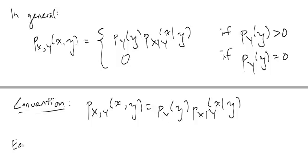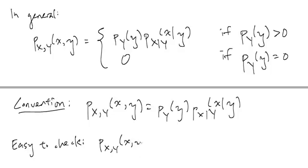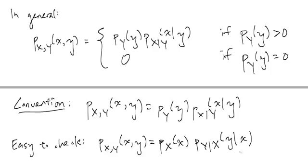It is easy to check that we derived the product rule by looking at the definition of conditional probability for random variable X given random variable Y. If we looked at the other direction, we would get P(X,Y)(little x, little y) equals P(X)(little x) times P(Y|X)(little y | little x). Both of these are valid ways to write the product rule, where again we are not explicitly writing out the case when P(X)(little x) equals zero.